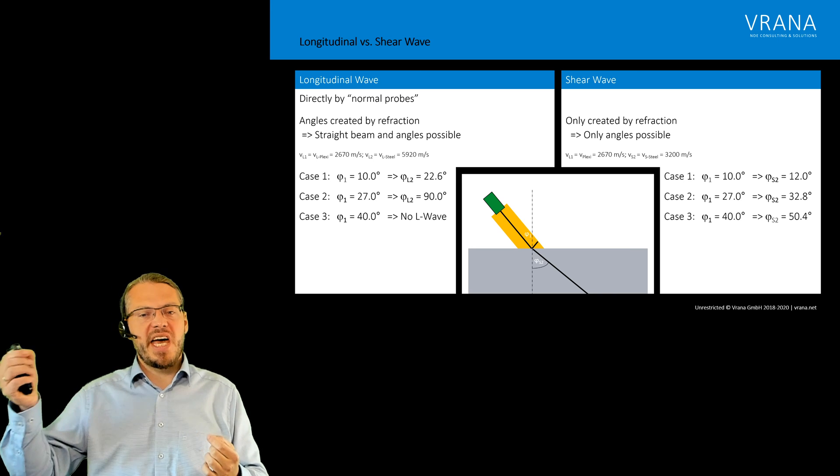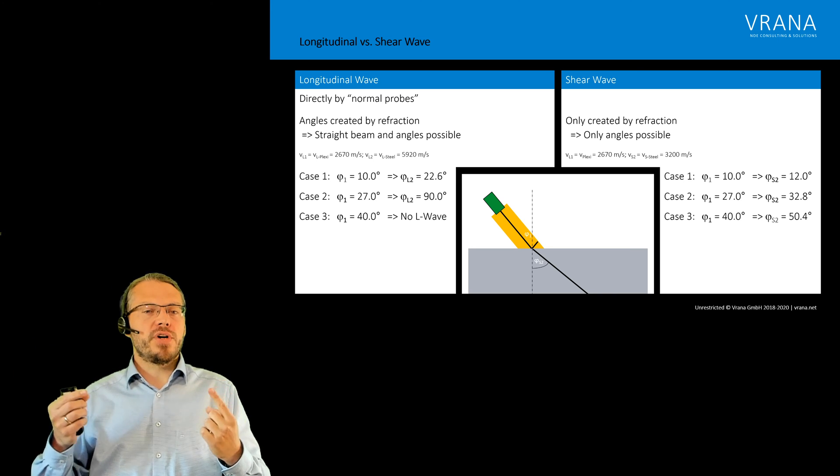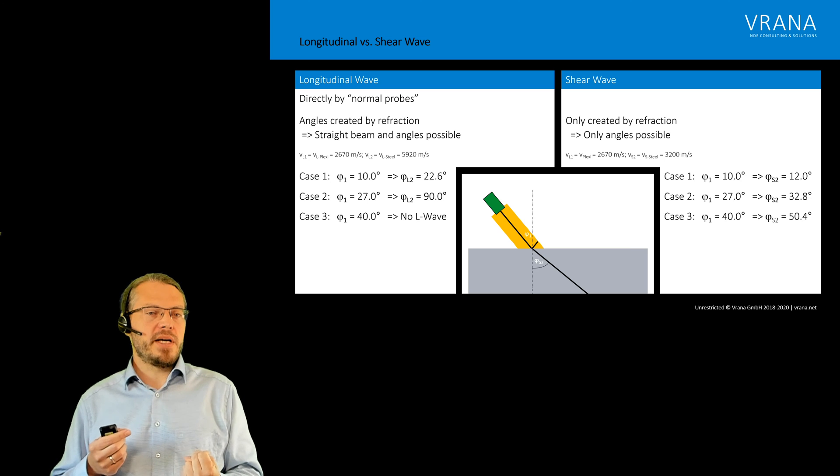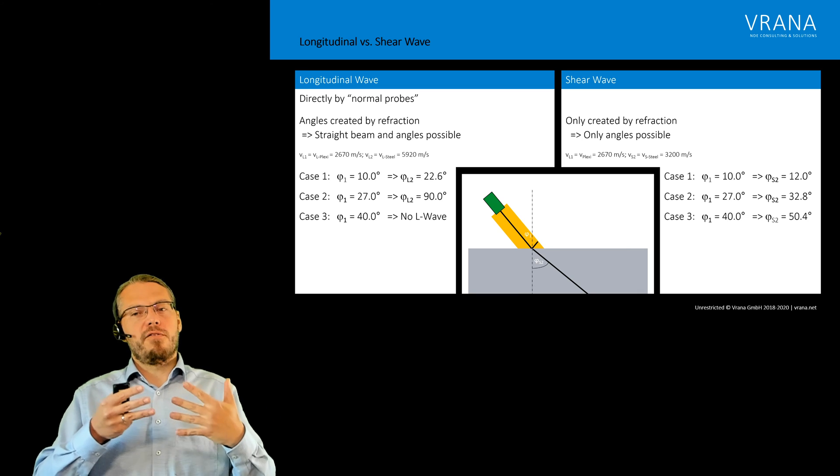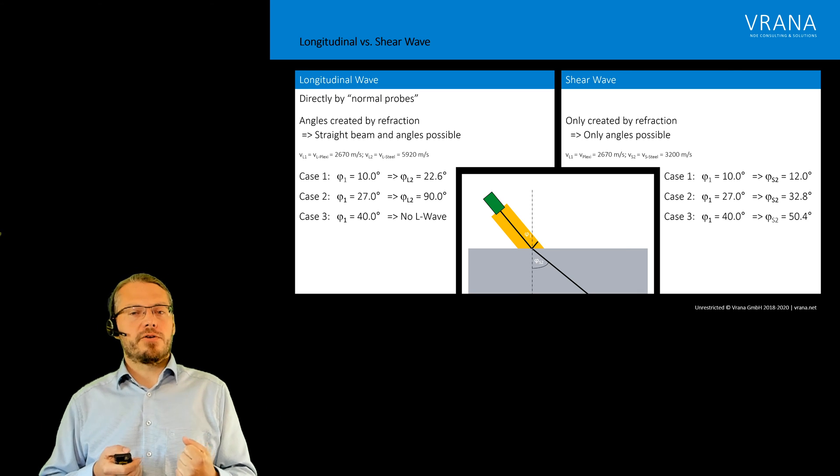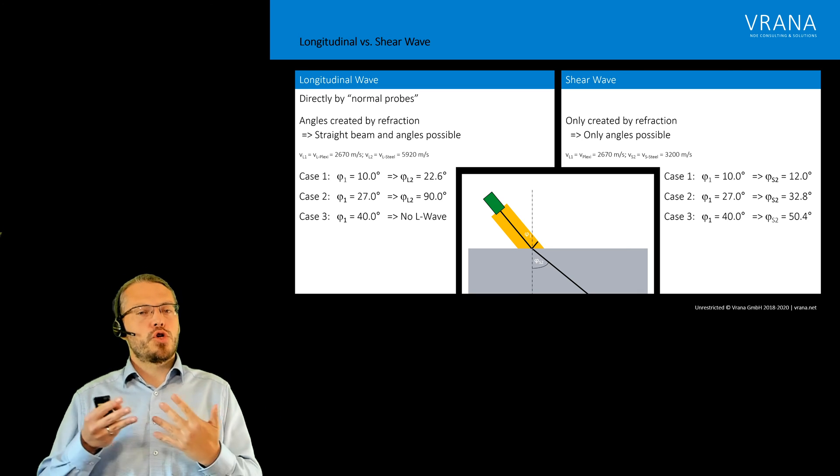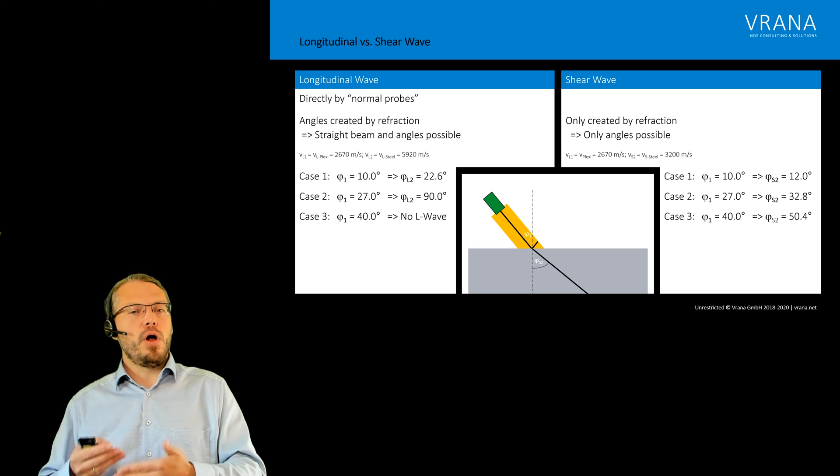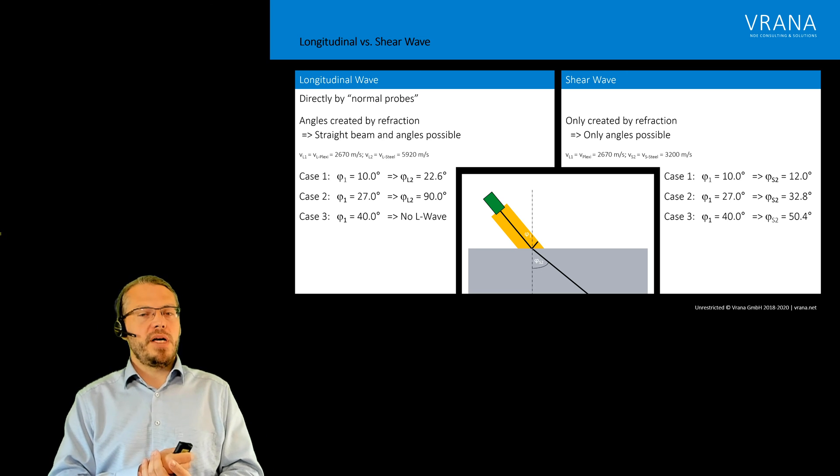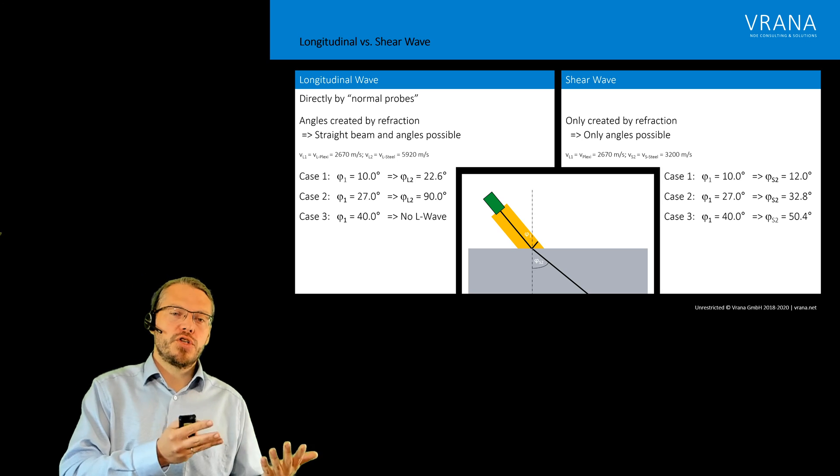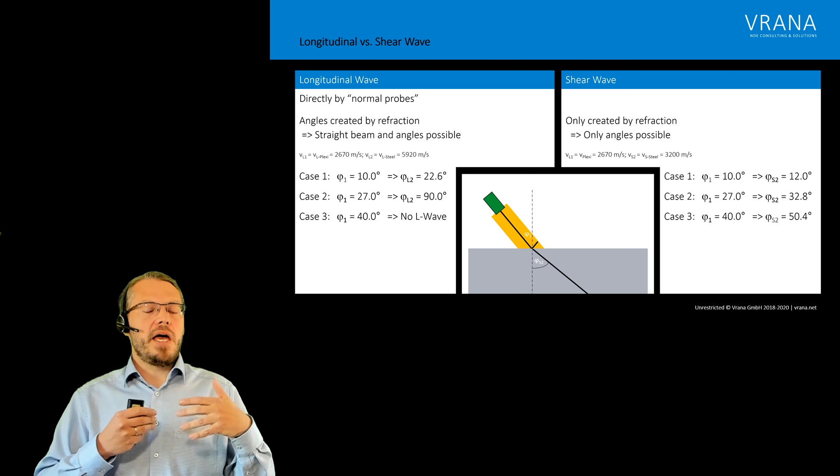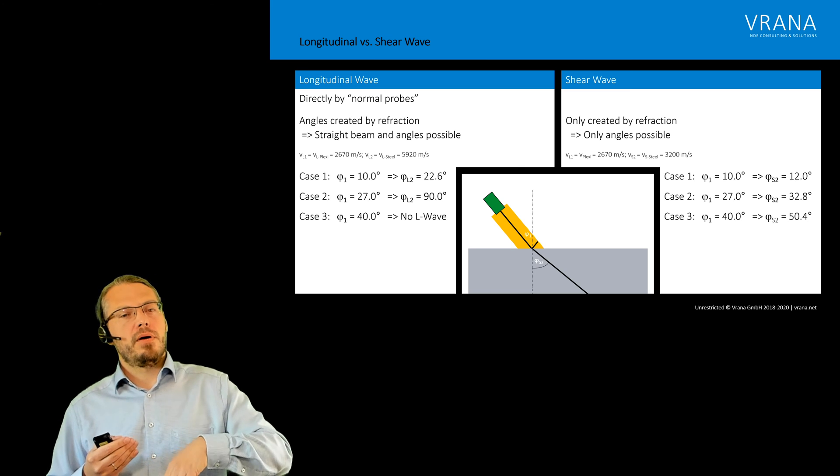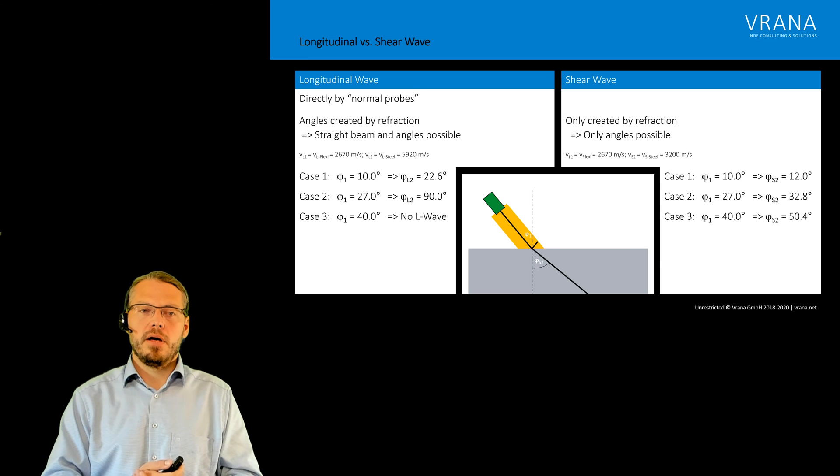So if you want to inspect a component with an angle of more than those 33 degrees, you should use shear wave probes. For all the angles below the 33, the longitudinal waves would be better. So but this would mean something like a wedge angle of below 10 degrees.